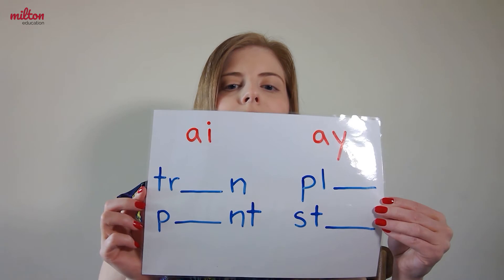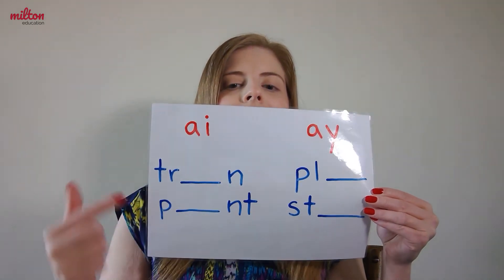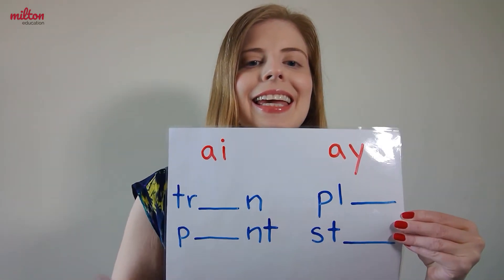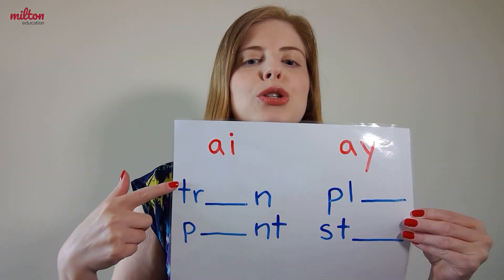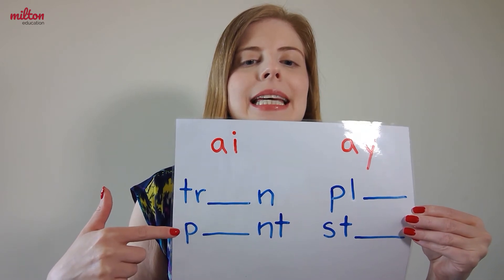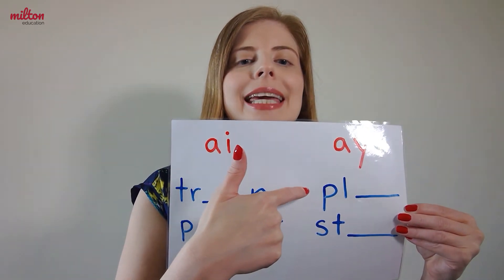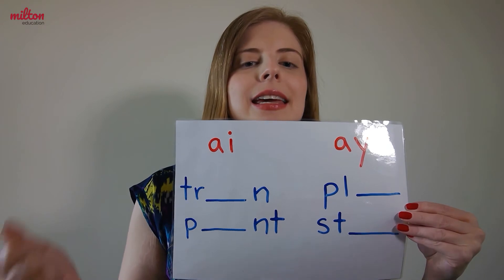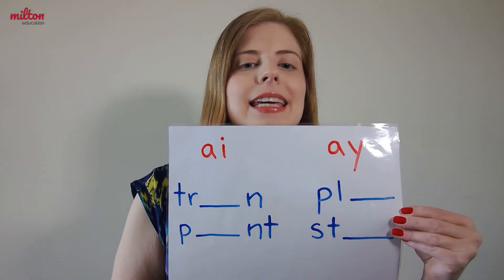Here we have a chart with A-I and A-Y. Let's make sure you can see my mouth. Look at my lips as I pronounce: train, paint, play, stay. So the long A vowel sound can be written as A-I, A-Y, or it can be in a word with the magic ee.